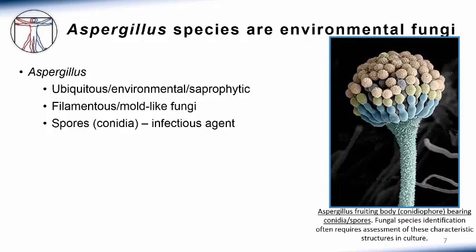Aspergillus species grow primarily in a filamentous or mold form. However, they also produce fruiting bodies or conidiophores, as demonstrated in the photo on the slide. The fruiting bodies are the sites of spore formation, and these airborne spores, or conidia, are the infectious forms of this fungus. Humans are exposed to numerous Aspergillus conidia on a daily basis, inhaling them into both the upper and lower respiratory tracts. In most people, these spores are efficiently removed by our innate immune barriers, such as mucociliary clearance. Those few remaining spores are killed by innate immune cells such as resident macrophages or neutrophils.